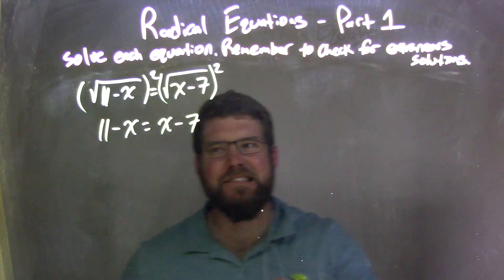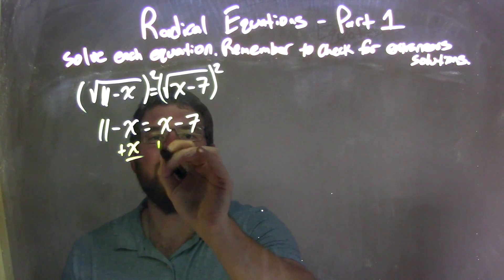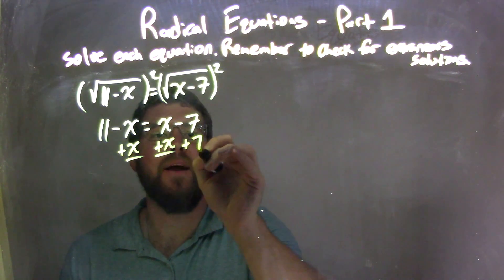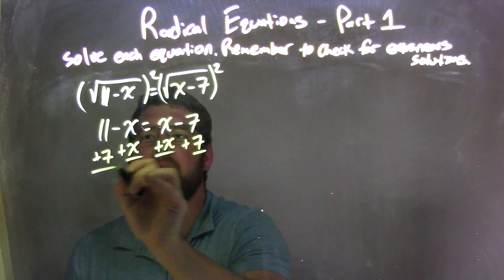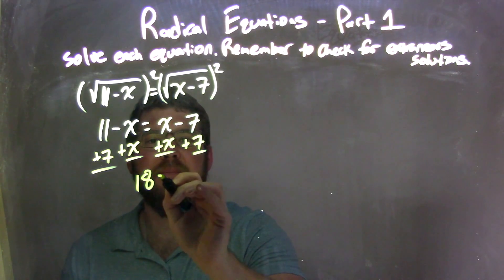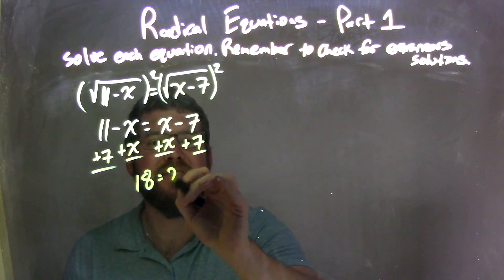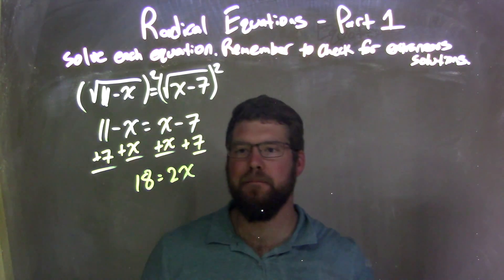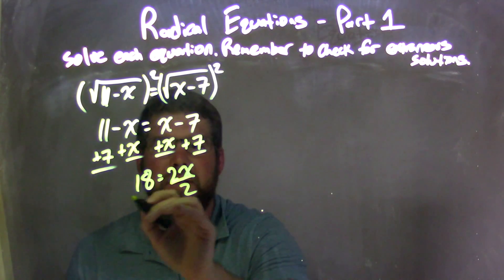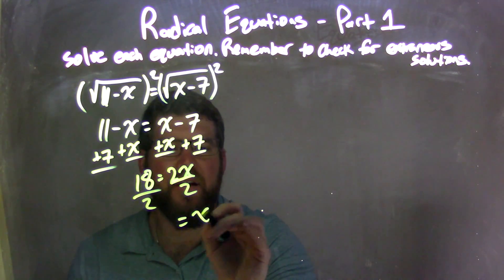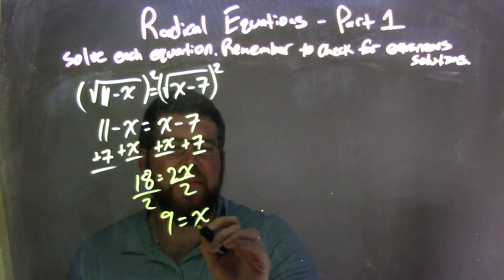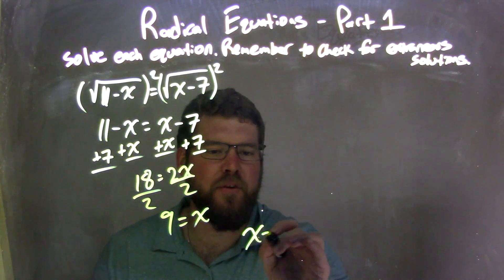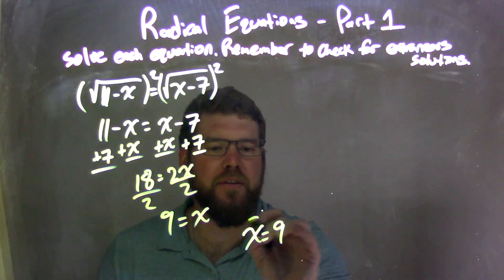Now we combine our like terms. I'm going to add an x to both sides, bring my x's to the right and my numbers to the left. 11 plus 7 is 18, x plus x is 2x. Divide both sides by 2. Get x by itself. 18 divided by 2 is 9. x equals a positive 9.